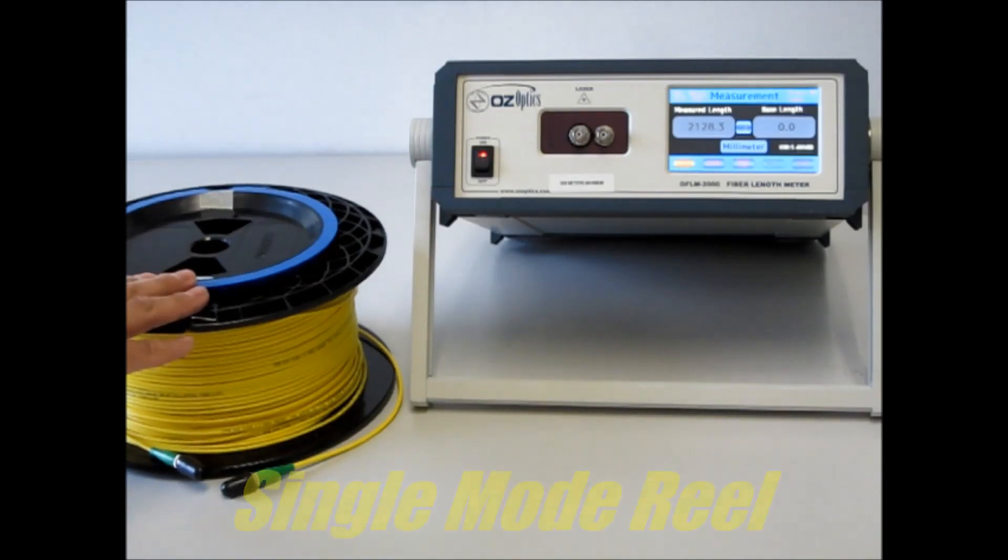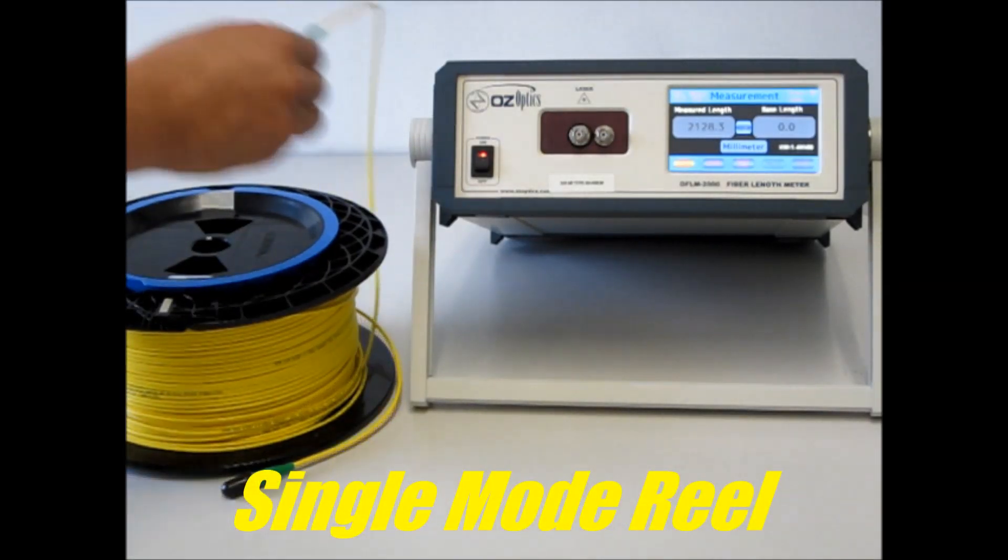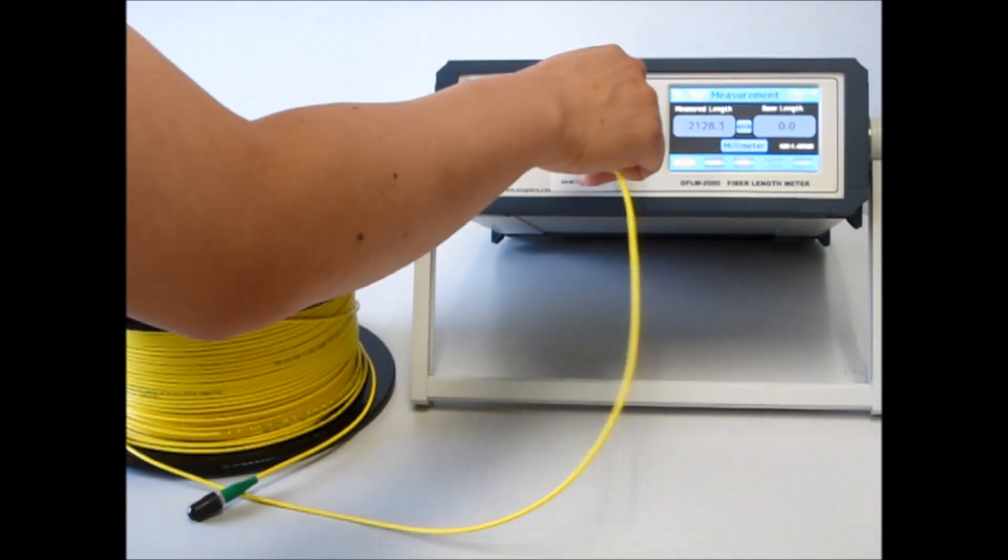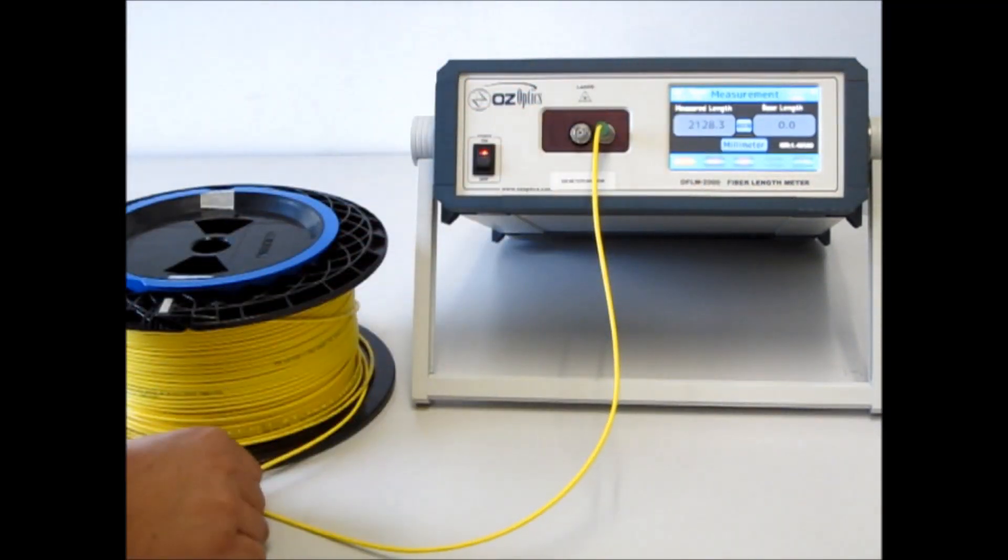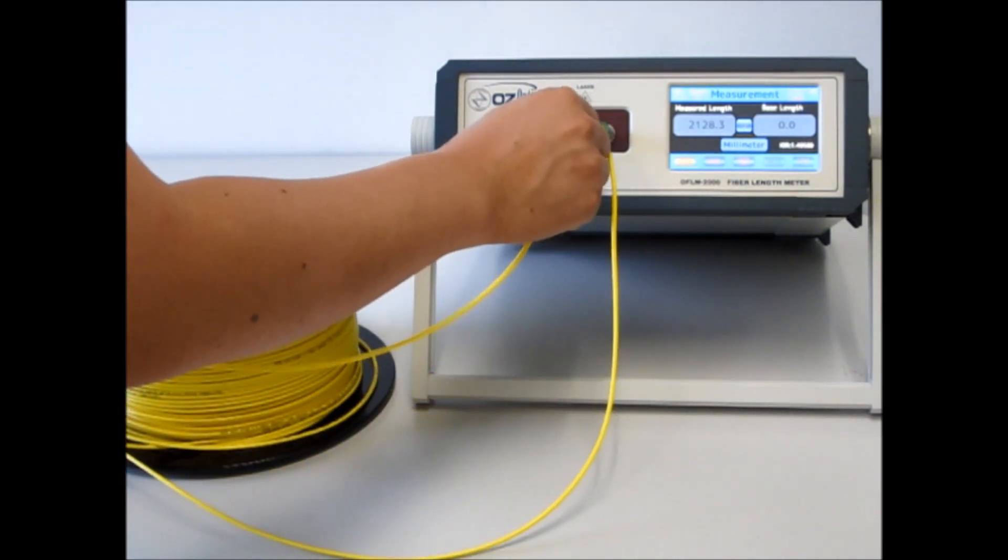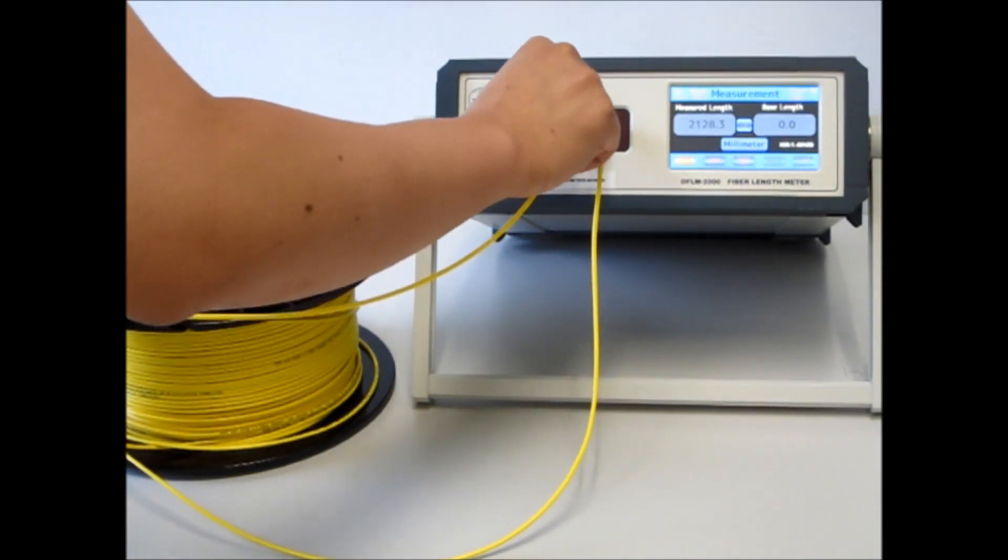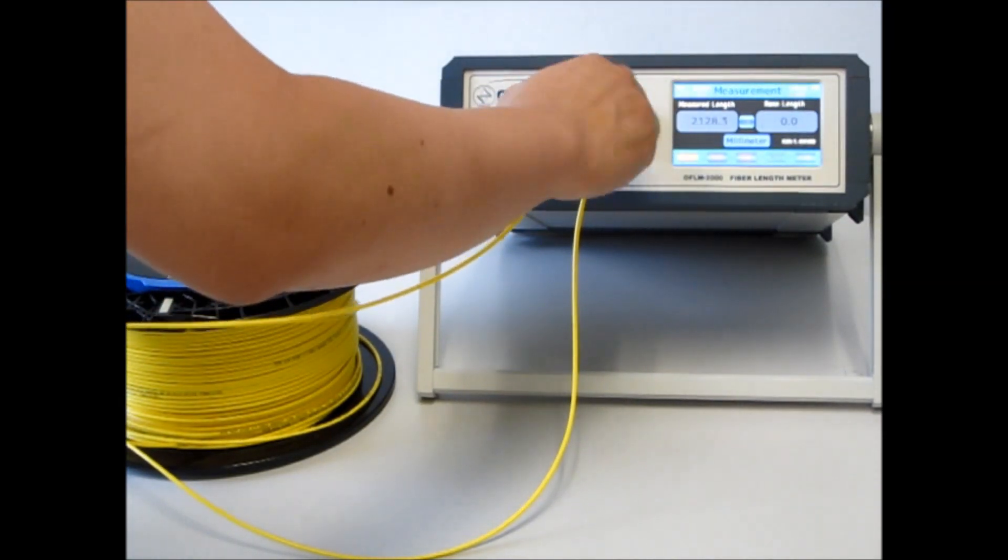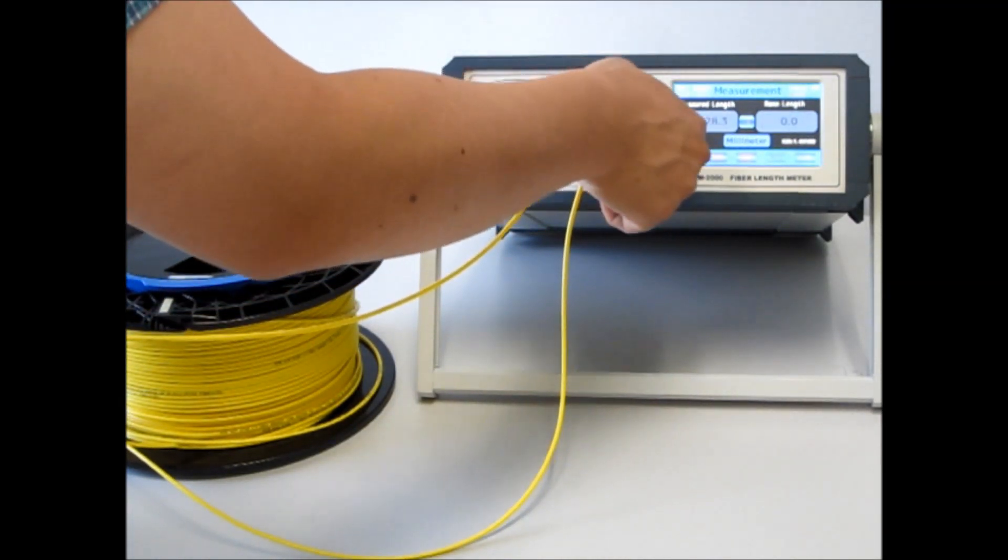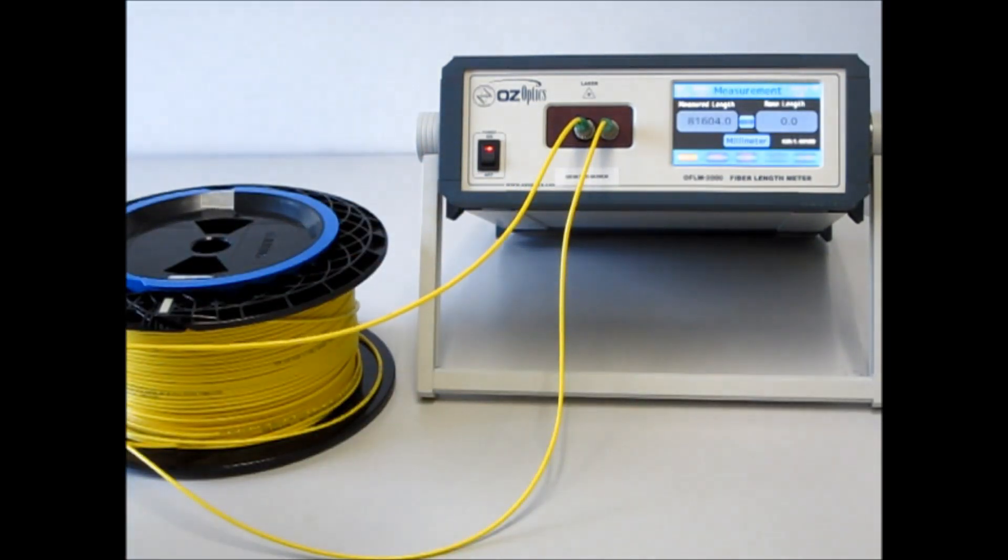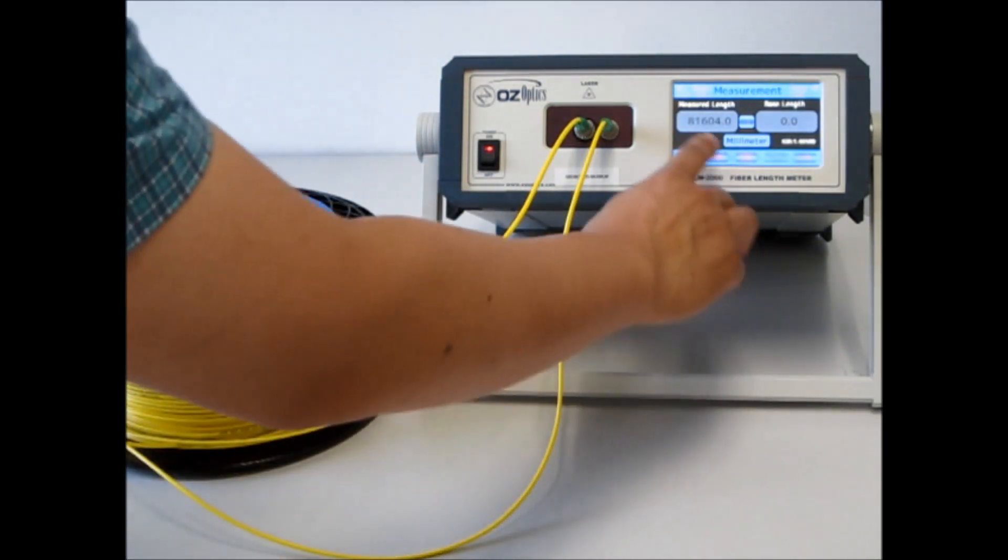This yellow one is a long spool of single-mode telecom fiber. We'll plug one end in and then the other end in. Then push the run button and you'll see that this patch cord is 80 meters long.